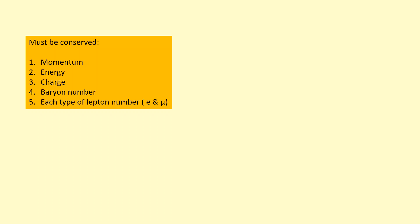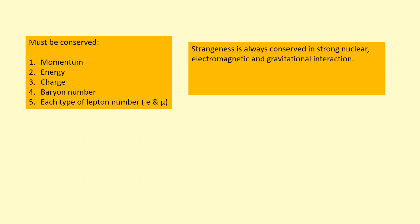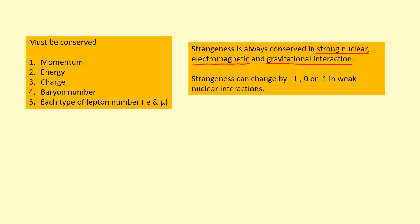Other quantities that must be conserved in any interaction are charge, baryon number, and each type of lepton number — so electron lepton number and muon lepton number. Strangeness is conserved in strong nuclear, electromagnetic, and gravitational interactions, but does not need to be conserved in the weak nuclear interaction, where strangeness can change by plus one, zero, or minus one.